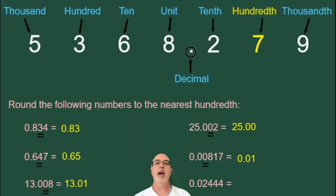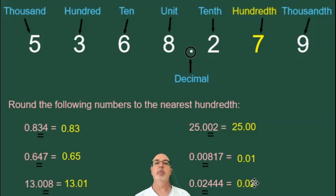And now we have 0.02444. The 2 is in the hundredth position. The number to the right of it is a 4, which is less than 5, so we round down. Our answer is 0.02.